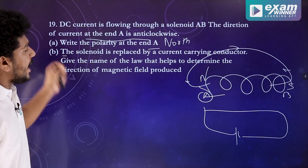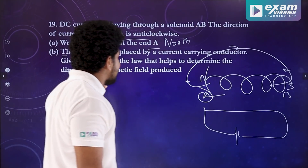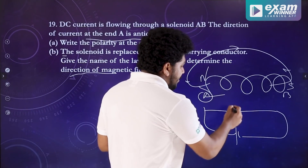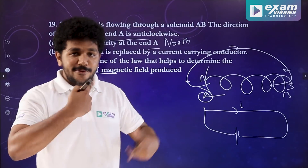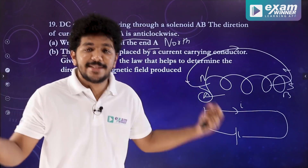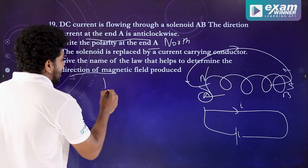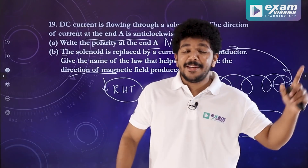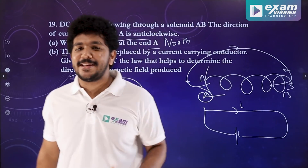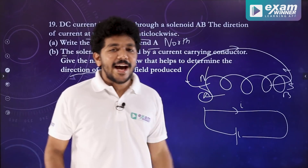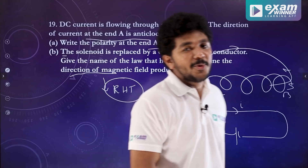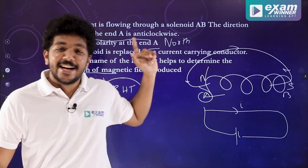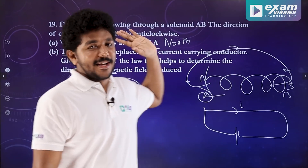Give the name of the law that helps us to determine the direction of the magnetic field around a current-carrying wire. We will say the right-hand-thumb rule. We will discuss this in our first video of this second chapter. If you want to see the right-hand-thumb rule, you can refer to that question.